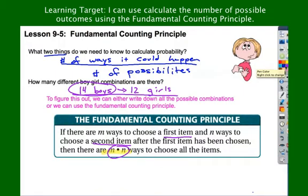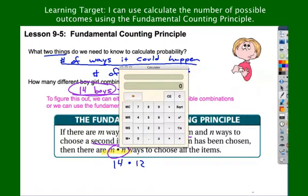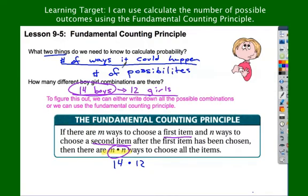Going back to our example, to figure out the total number, I have two choices here, right? I have the boys, and I have the girls. I have to choose a boy, I have to choose a girl. There's my number of choices for each. If I multiply those together, I get my total number. So 14 times 12 is 168. 168 combos of boys and girls.